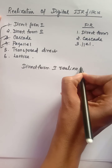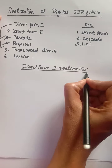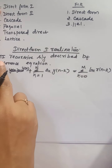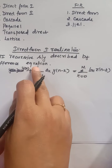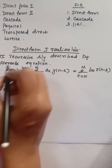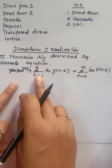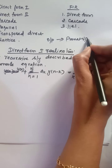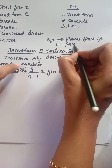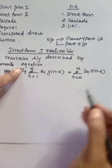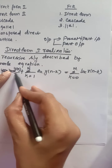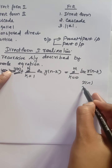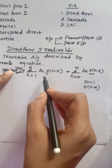First we will recall what is an IIR filter and see the input-output related equations in direct form one realization. Consider an LTI recursive system described by a difference equation. In an IIR filter, the output depends upon the present and past input, and also upon the past output. Here y(n) is the output - it depends upon present input x(n) and past input x(n-k).